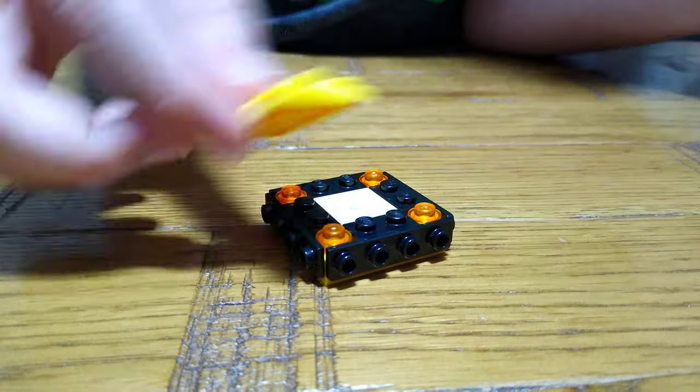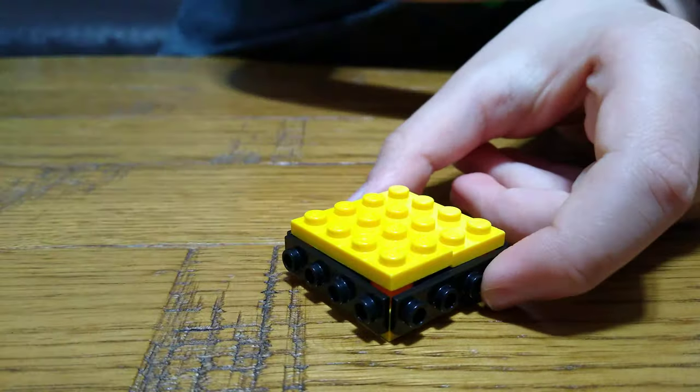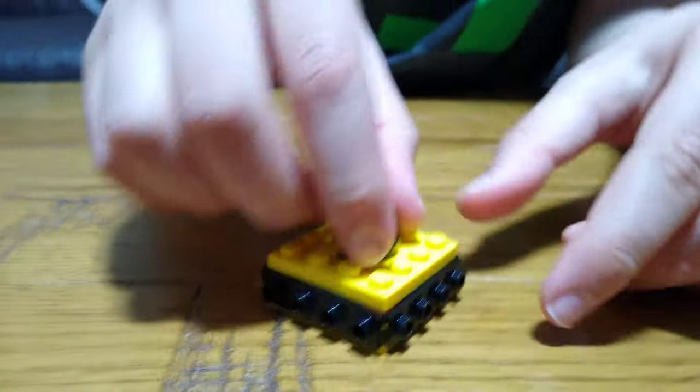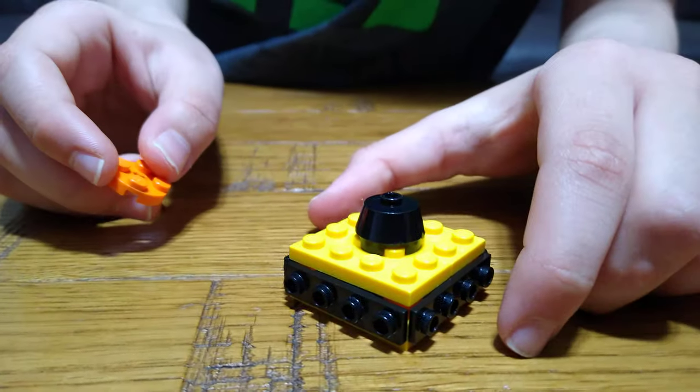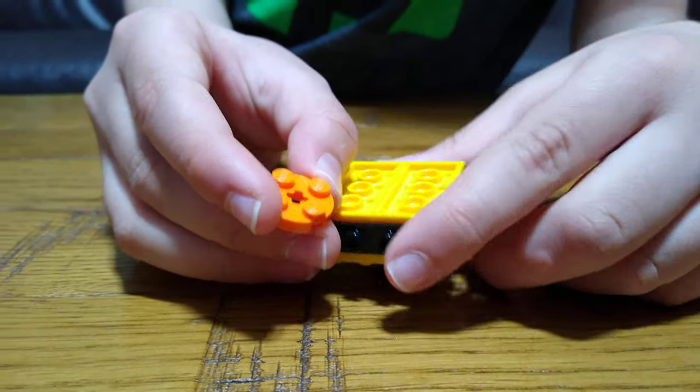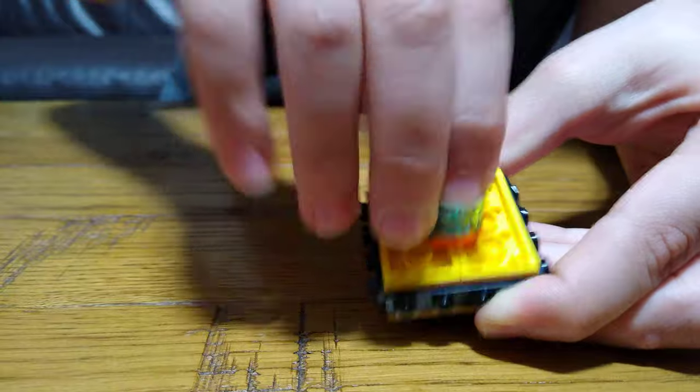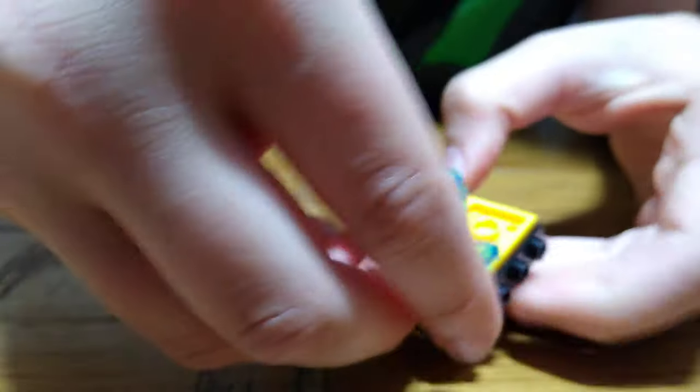Then place two of these on the top. Put this here, and then turn it around, put this on top, this over here, put four of these on each side like this.